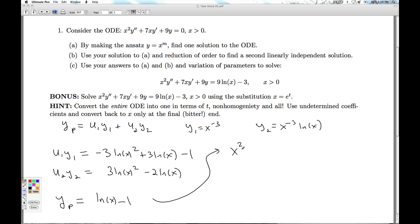And you can check this. Remember what the particular solution is supposed to do. It's supposed to handle the non-homogeneous part of the Diffie Q. So you can check this out. It's not too bad. yp prime is 1 over x. yp double prime is minus 1 over x squared. You end up getting negative 1 plus 7 plus 9 natural log of x minus 9. And sure enough, that'll check out to be 9 natural log of x minus 3. So that yp does the job.